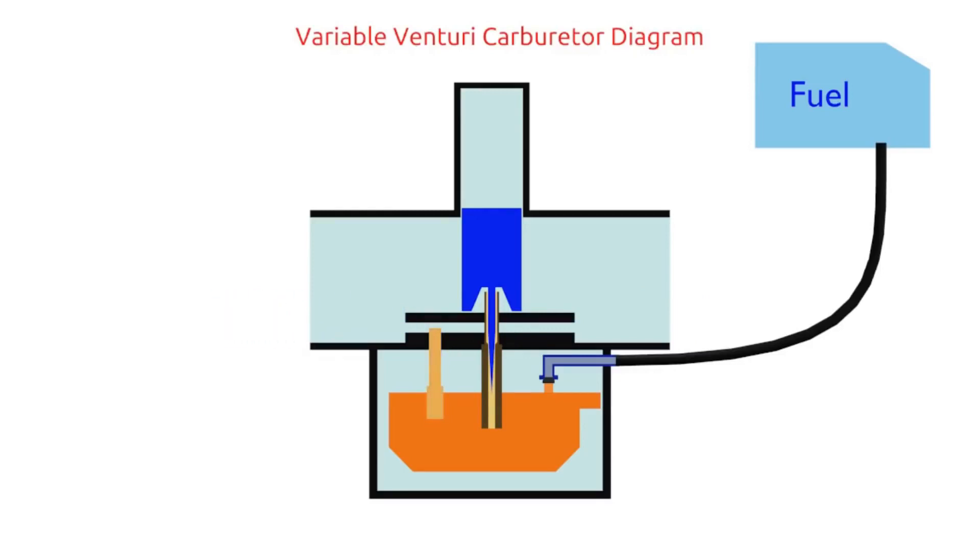When we pull the RPM handle, the piston is lifted. It makes the Venturi wider and main jet is open. So that, greater air volume flow through the Venturi and fuel also suck through the main jet.